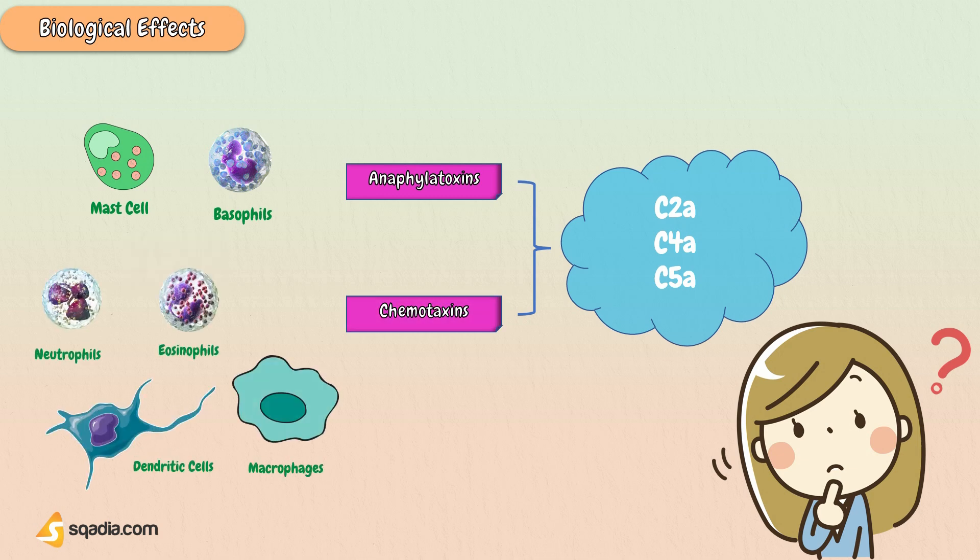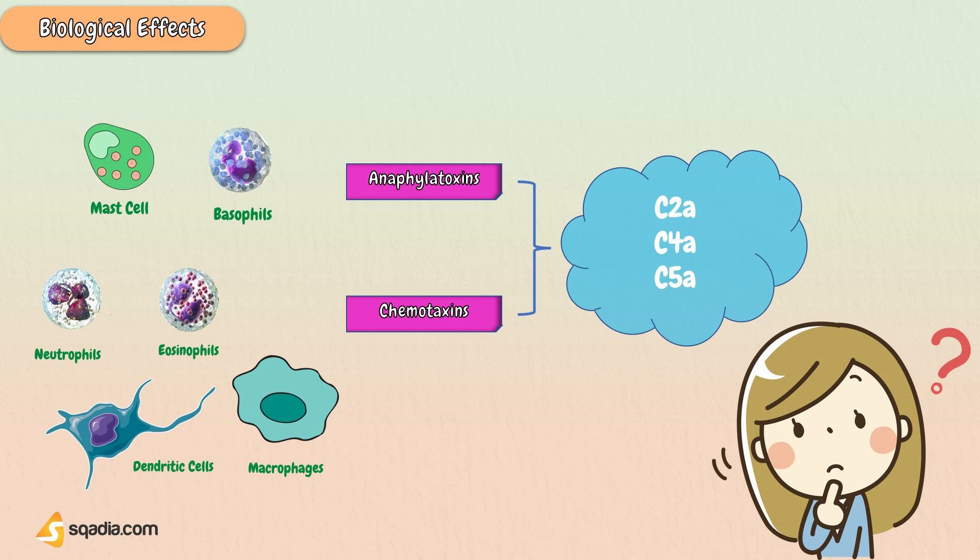Chemotaxins are the substances that stimulate the movement of white blood cells, free radicals, and lysosomal enzymes to the area of infection or injury.